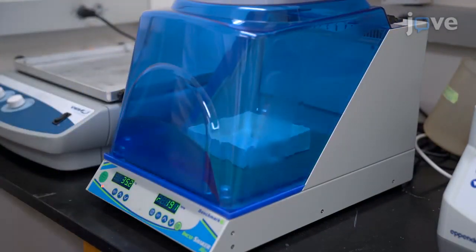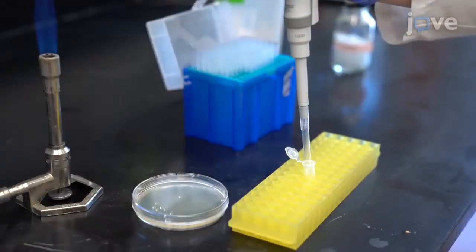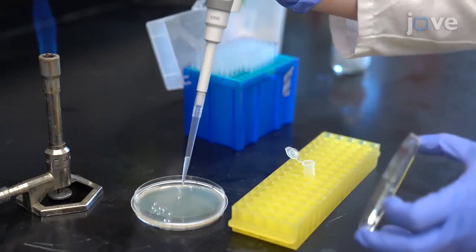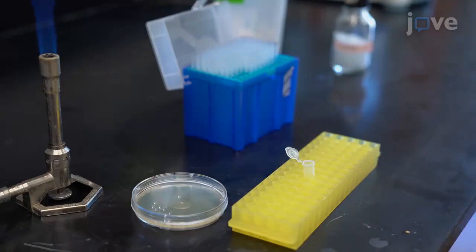At the end of the incubation, add approximately 10 autoclaved glass beads and 100 microliters of cells to a 37 degrees Celsius warmed lysogeny broth agar plate with the appropriate antibiotics and shake the plate horizontally.